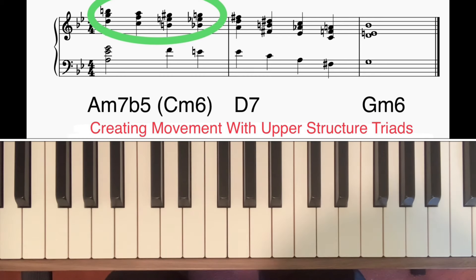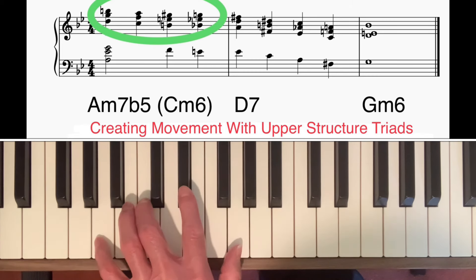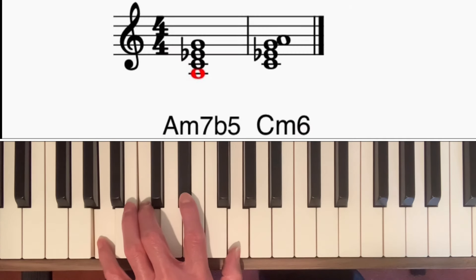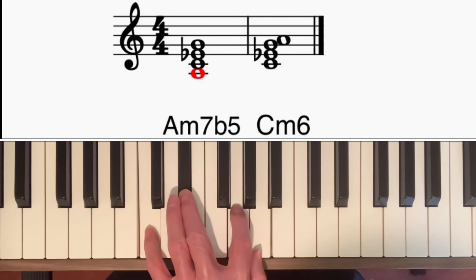The first thing that I want to talk about is the use of upper extension triads over the minor 7 flat 5 chords. Now Barry Harris used to teach that an A minor 7 flat 5 chord, A, C, E flat and G, is the same as a C minor 6 chord. They contain exactly the same notes.